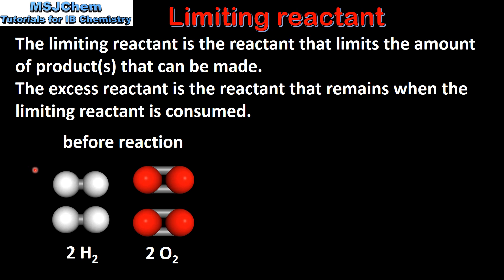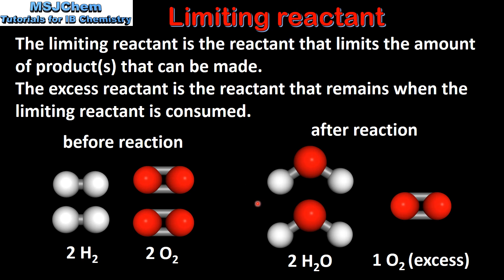Let's look at an example. Two molecules of hydrogen and two molecules of oxygen react together — what's the maximum amount of water that can be made? The answer is two molecules of water. Each water molecule is composed of two hydrogen atoms and one oxygen atom, so for every one oxygen atom we need to have two hydrogen atoms. Because we are starting with a total of four hydrogen atoms, the maximum number of water molecules we can make is two.